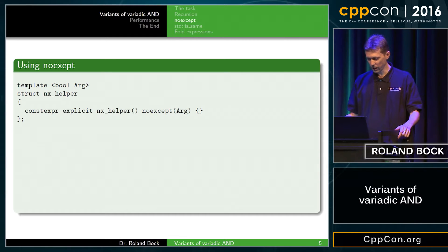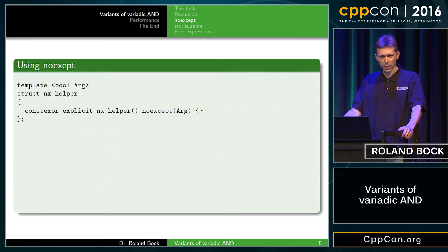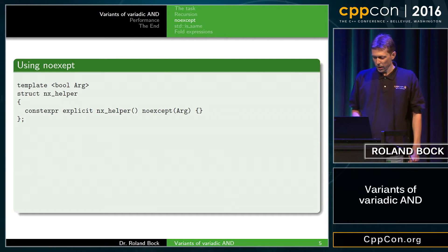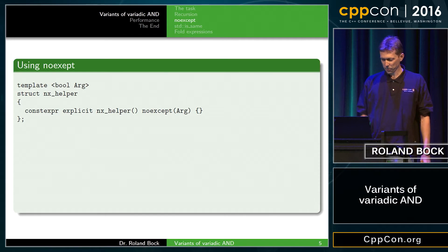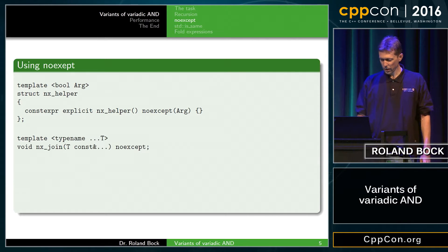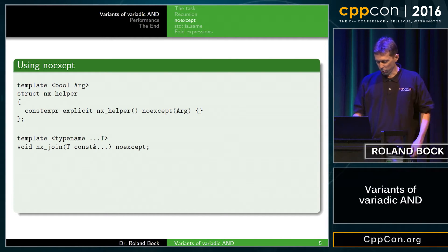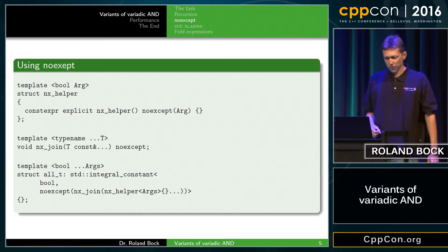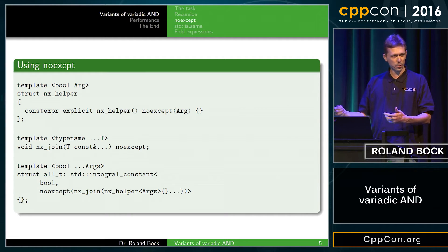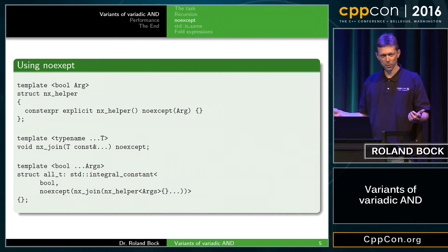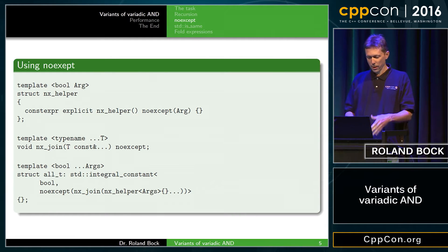Now we're going to come to something interesting: using noexcept. Noexcept is a nice keyword — you can use it to declare something to be noexcept and also to query if something is noexcept. We start with a helper, NX helper, declared to be noexcept if the bool argument is true. Then we use a function, NX join, that is always noexcept and takes any number of arguments. We ask the compiler: if we take all our arguments and construct noexcept helpers from those and put everything as arguments to NX join, is the whole thing noexcept? The compiler will say: if everything is true, then all the NX helper constructors are noexcept and the whole thing is noexcept — otherwise it's false.